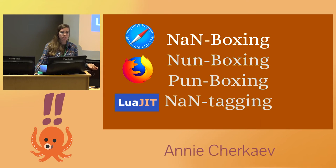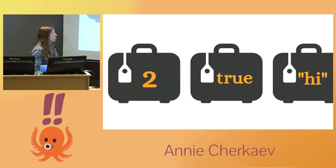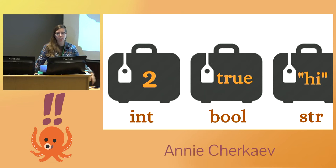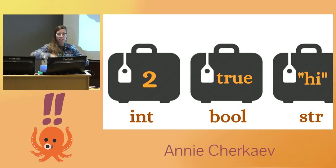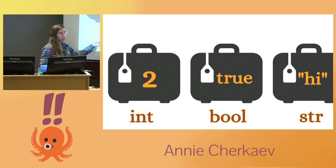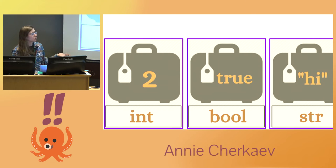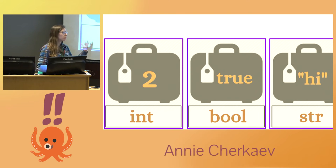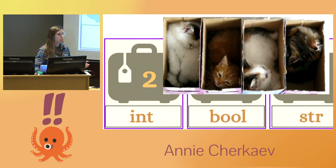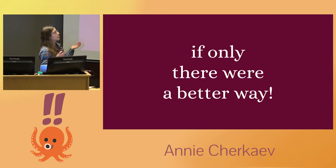So this is the problem that NaN boxing is trying to solve. JavaScript is a dynamically typed language, which means we've got values hanging out at runtime and we really need to keep track of what the types of these values are — because maybe we want to add two integers together, but we should really be checking the type tags to make sure. We could just allocate an extra 64 bits to keep track of type information, but as the JavaScript interpreter, that bums me out because I have to use more memory, and I'd be reading the type tag into its own register all the time, which can create register pressure and might lead to performance issues.